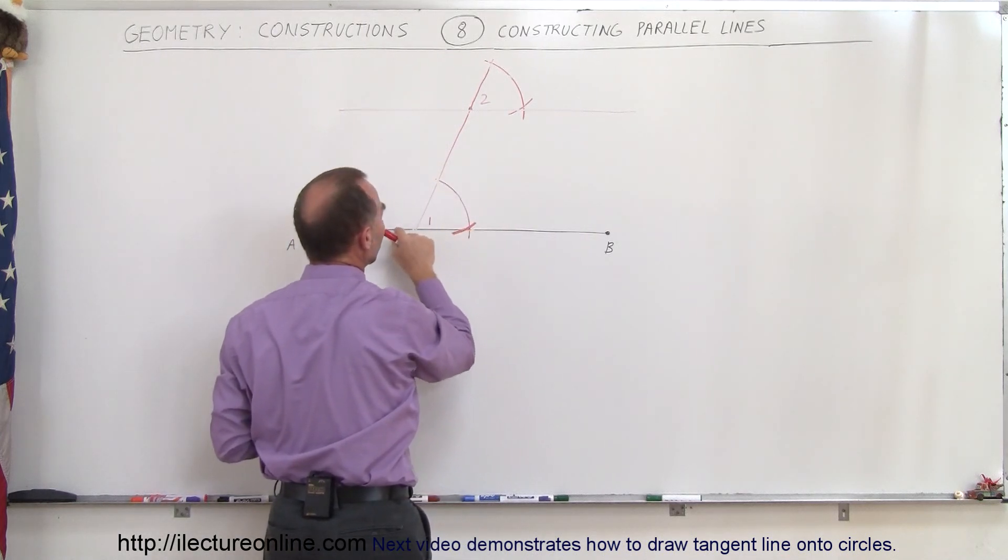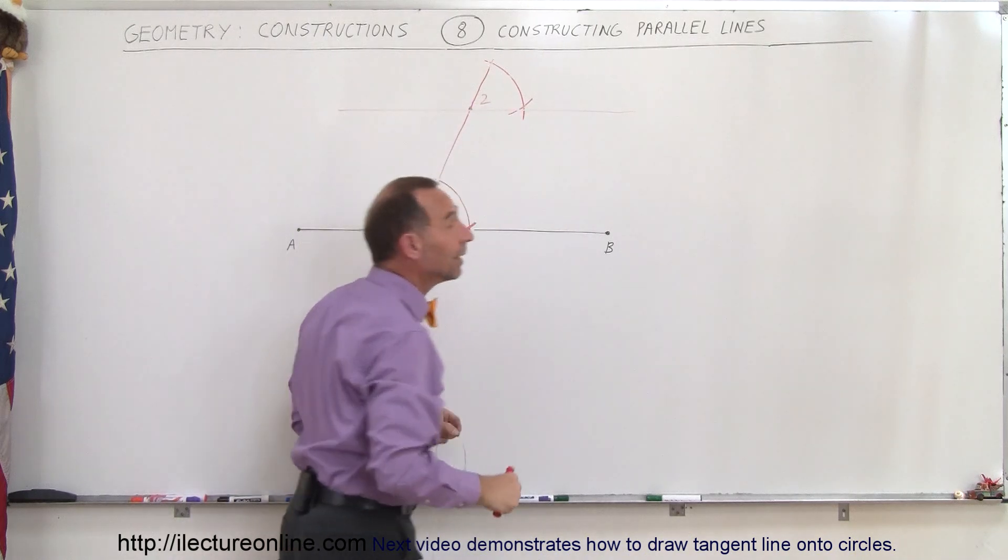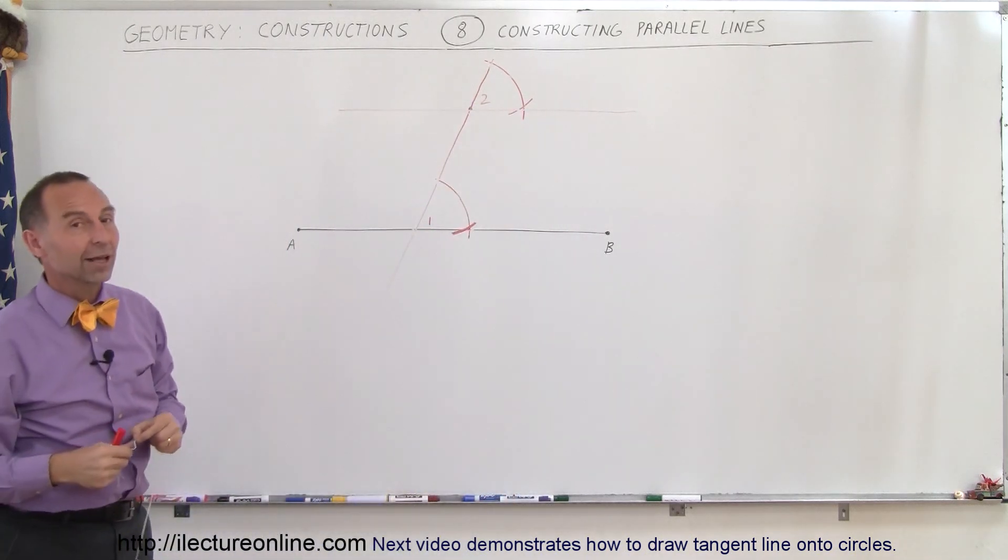And you can then see that this point and this point go through this line. That means this point and this point will go through that line as well. And that's how you find the parallel lines.